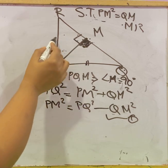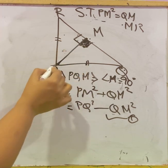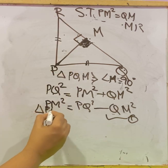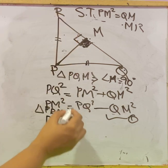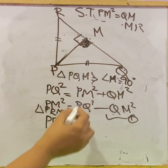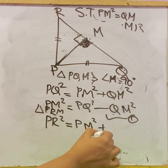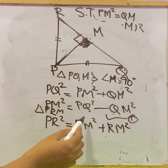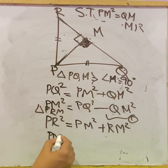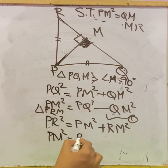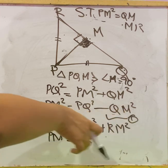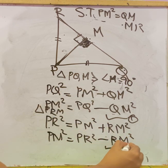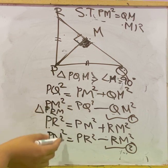Now considering triangle PRM, angle M = 90° again, and the side opposite is the hypotenuse PR. So in △PRM: PR² = PM² + RM². Rearranging: PM² = PR² − RM². Let this be equation (2).